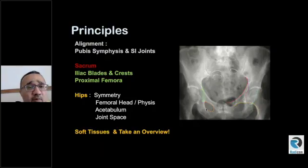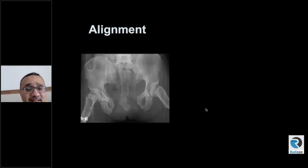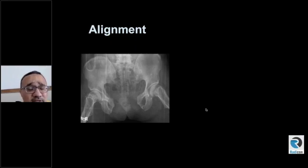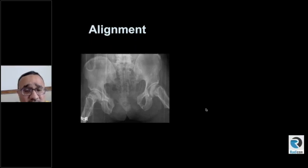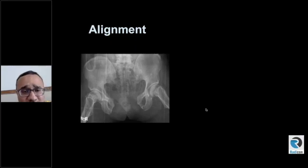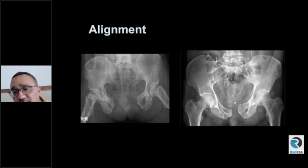So now we're going to go through these things one by one. That's an obvious abnormal plain radiograph showing an open book pelvic fracture, AP compression type, but it's unlikely in the exam that they're going to show you this kind of film. The reason I've put this on is just to demonstrate there is marked widening of the pubic symphysis.